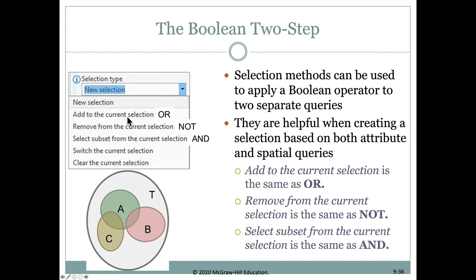Some of these selection options are like the booleans we talked about before. Adding to the current selection is like an OR. Removing from the current selection is like a NOT. And selecting a subset from the current selection — where it has to fit both criteria — is an AND. So if we wanted to select everything in A and then not select a part in B, we could remove everything in B and still be left with what was selected in A.